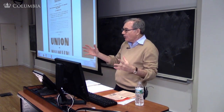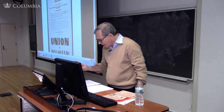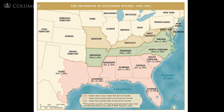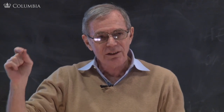So by February 1st, the secession of the Lower South is complete. I want to show you my map of secession: seven slave states secede from the Union, from South Carolina west — South Carolina, Georgia, Florida, out to Texas — in pink there. Seven slave states sever their connection with the Union from Lincoln's election to February 1st, 1861. But eight slave states remain in the Union. A majority of the slave states are still in the Union when Lincoln is inaugurated.